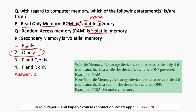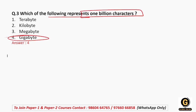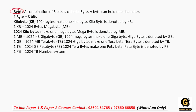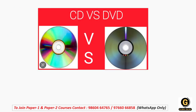Volatile और non-volatile की definition भी important topic है। Previous year question: which of the following represents 1 billion characters — correct answer है gigabyte। Memory की basic units होती हैं: bytes, फिर kilobytes, फिर megabyte (MB), फिर gigabyte (GB), फिर zettabyte और yottabyte। यह sequence याद रखना बहुत जरूरी है।